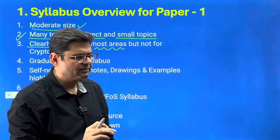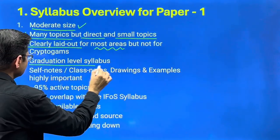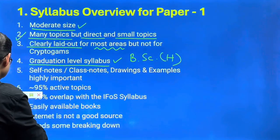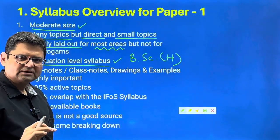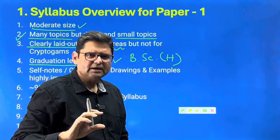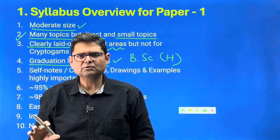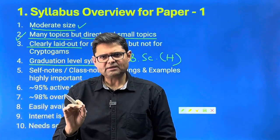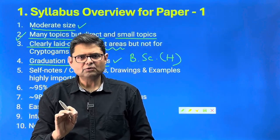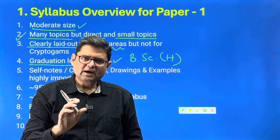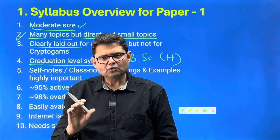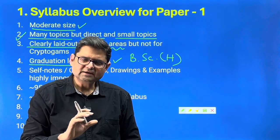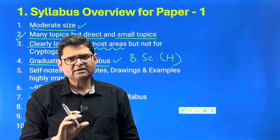The syllabus is graduation level — BSc honours level, as found in any good central university. Do not be under the illusion that it is master's level and requires multiple books on each topic. One very good resource and at most one supplementary book will be more than adequate, provided you know where to lay your emphasis and how to pick up important concepts and information for your notes and answers.